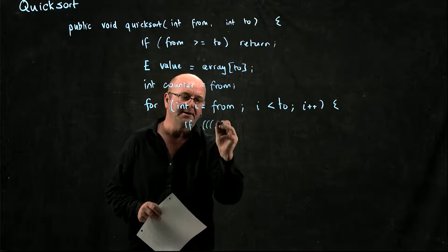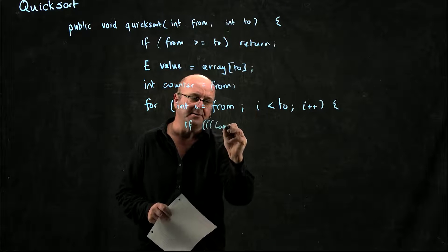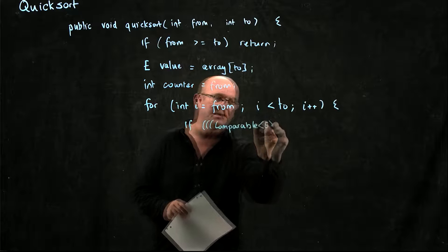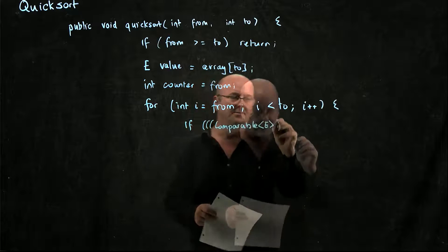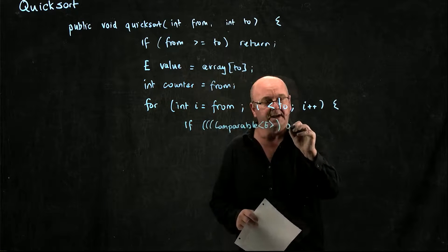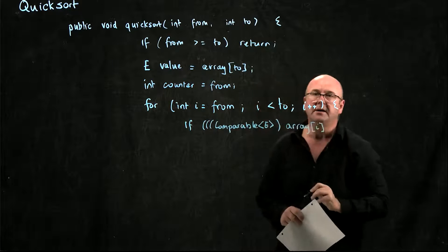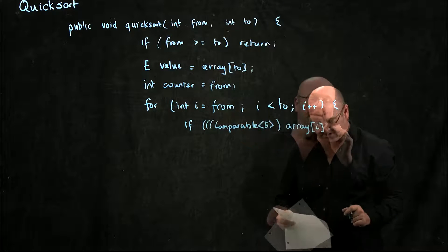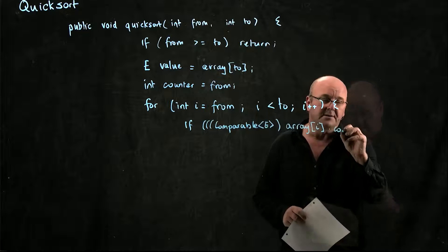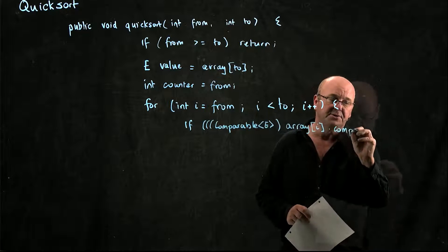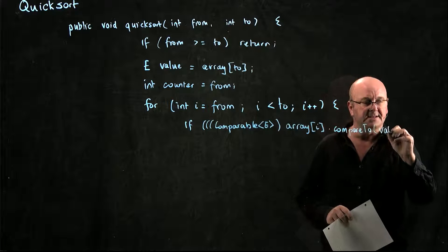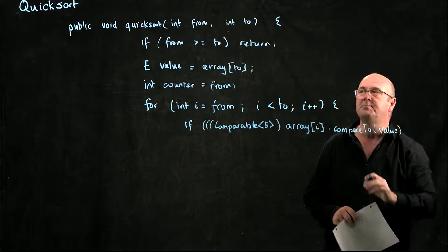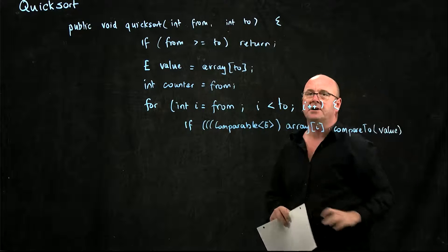And here we're going to use a Comparable — `((Comparable<E>) array[i])`, so that's the element that we're looking at — dot `compareTo`. And this is the value of the pivot point that we remember.